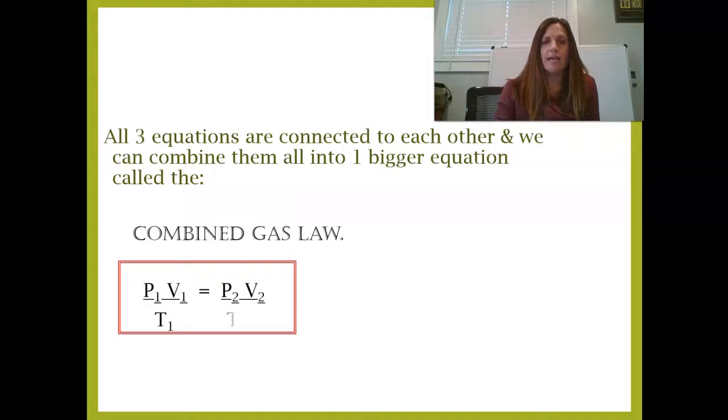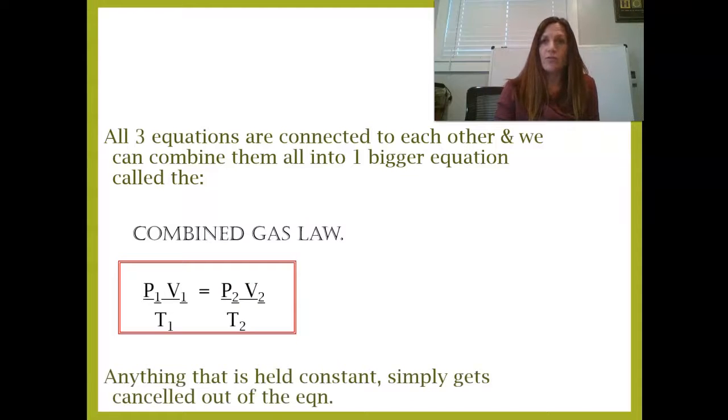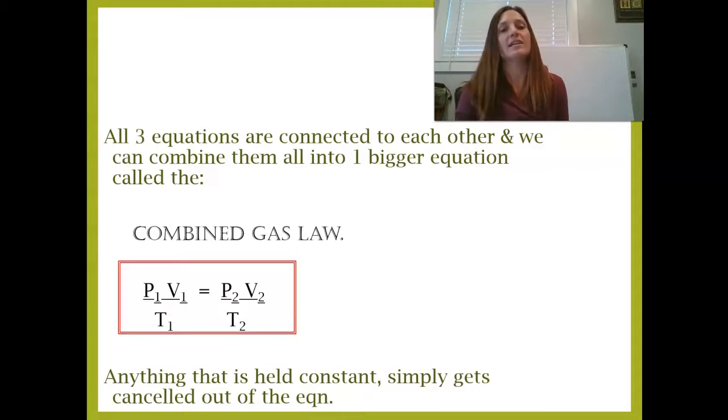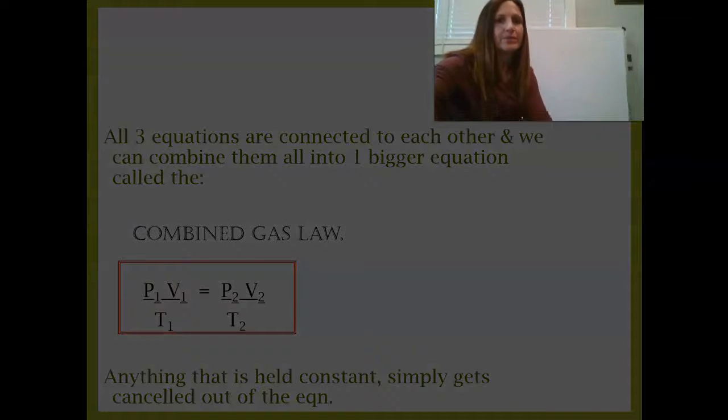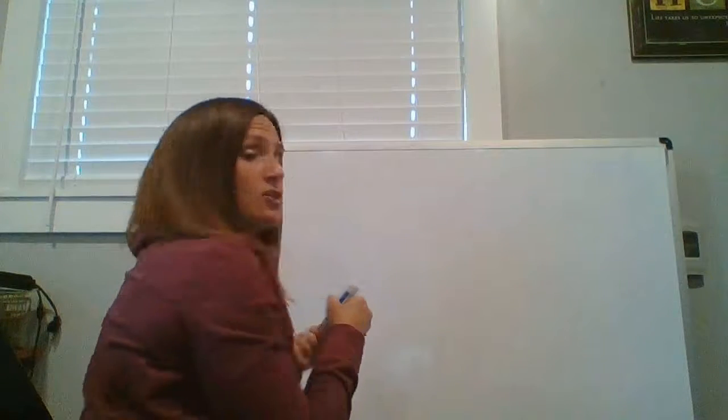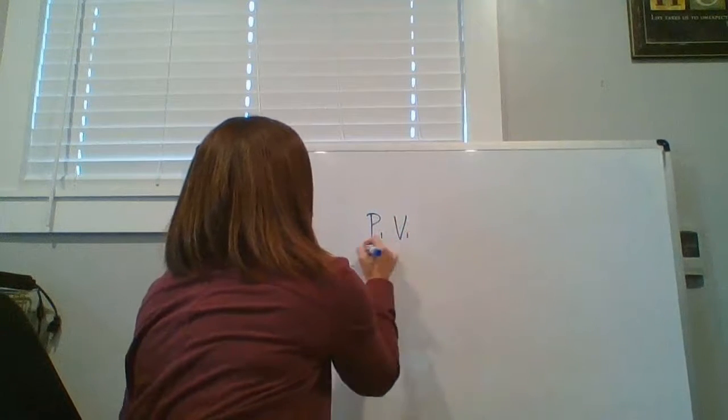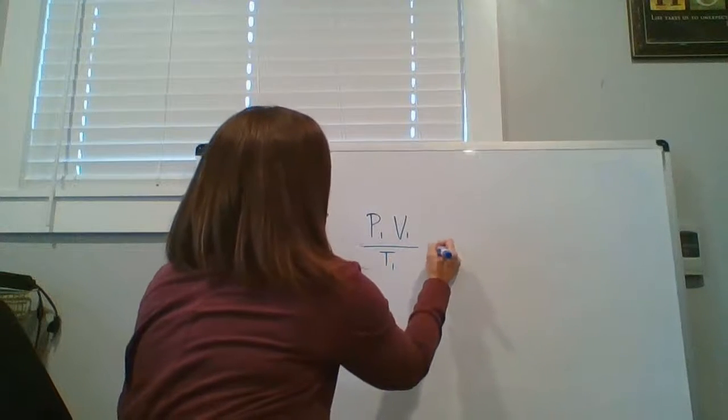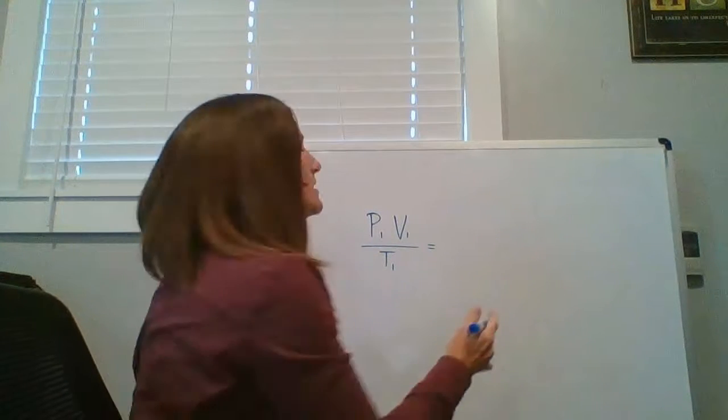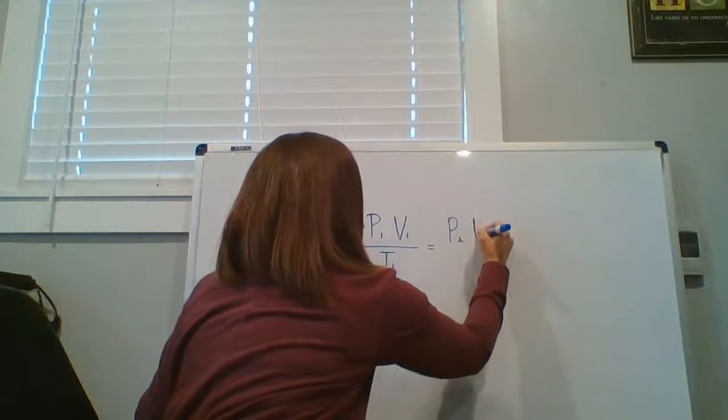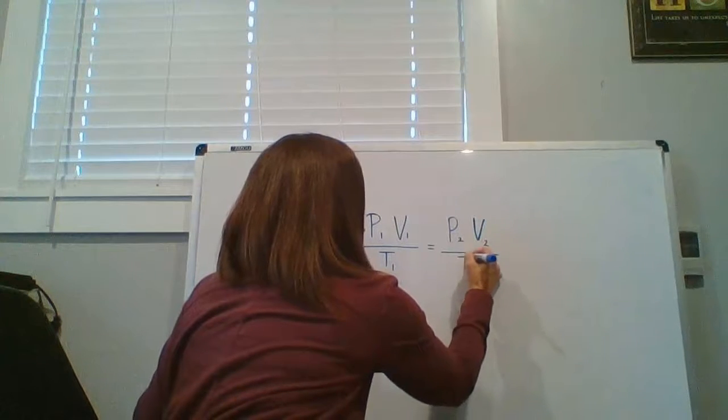So our combined gas law looks like P1V1 over T1 equals P2V2 over T2. We have a law here that allows us to look at all of the different variables all at once. So we have pressure one, volume one, and temperature one, P1V1 over T1 equals the other set of conditions, P2V2 over T2.